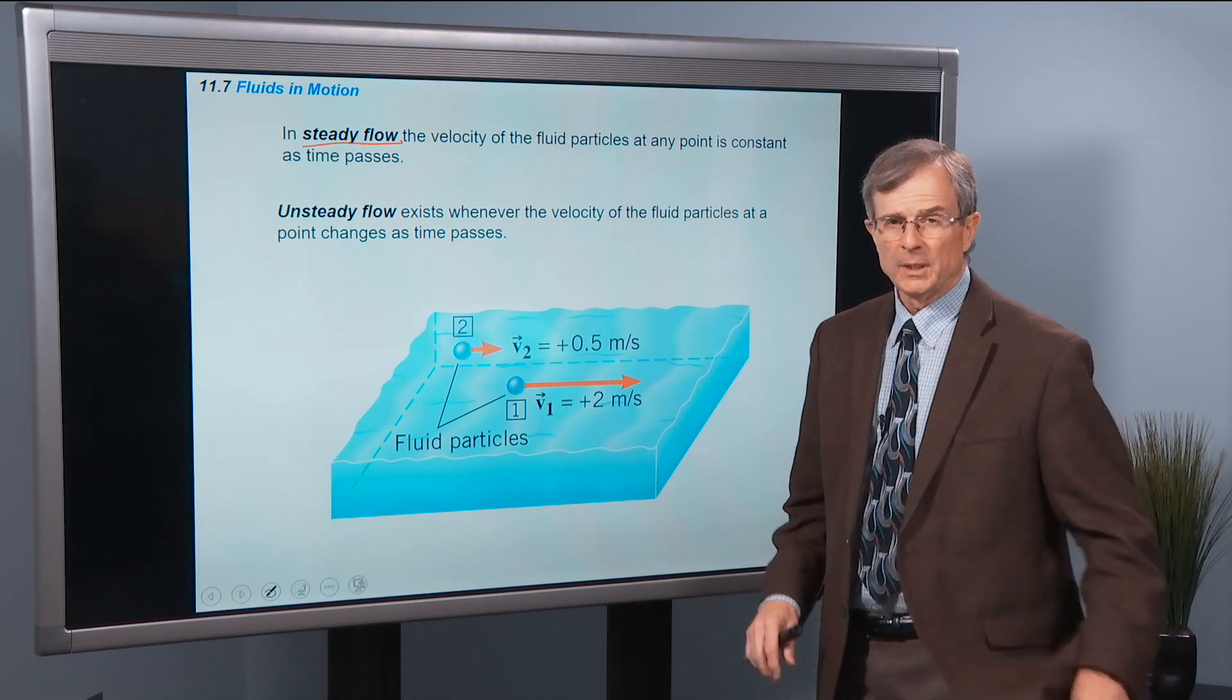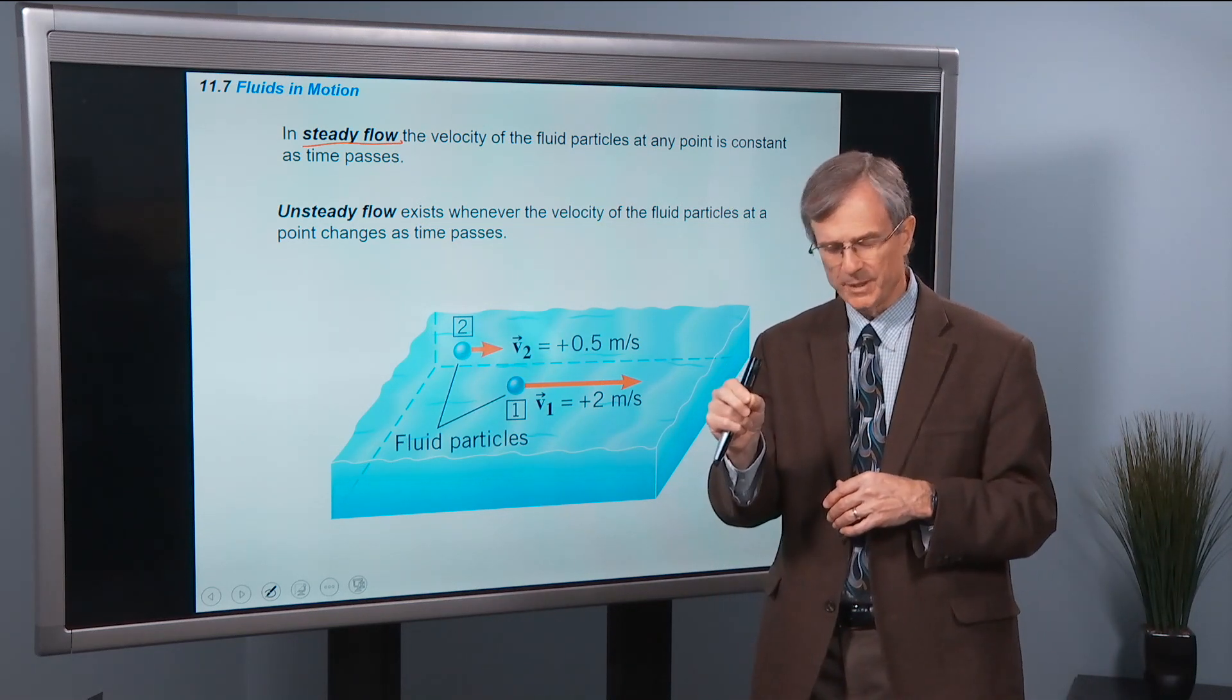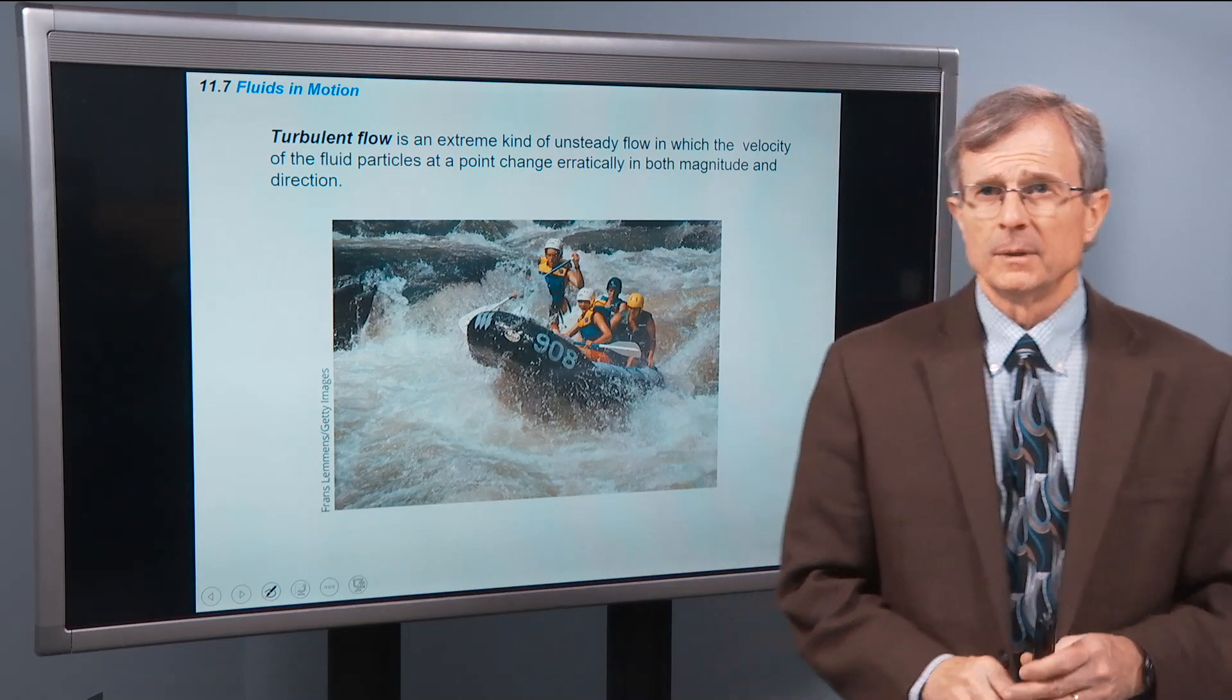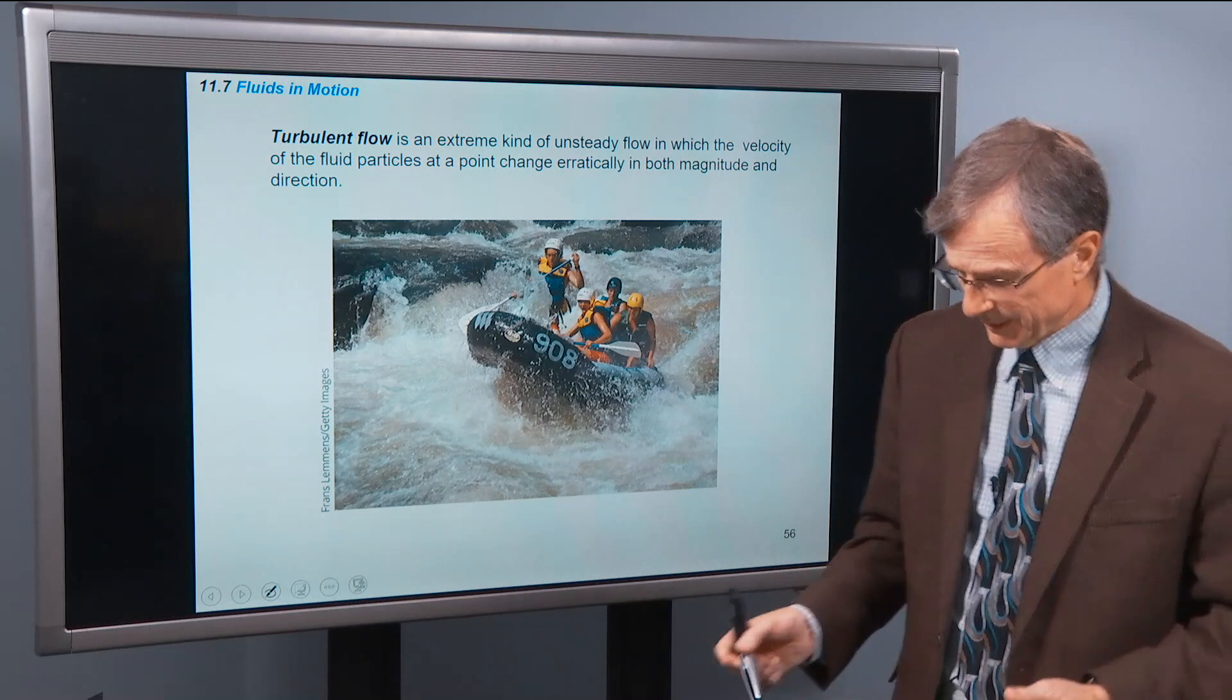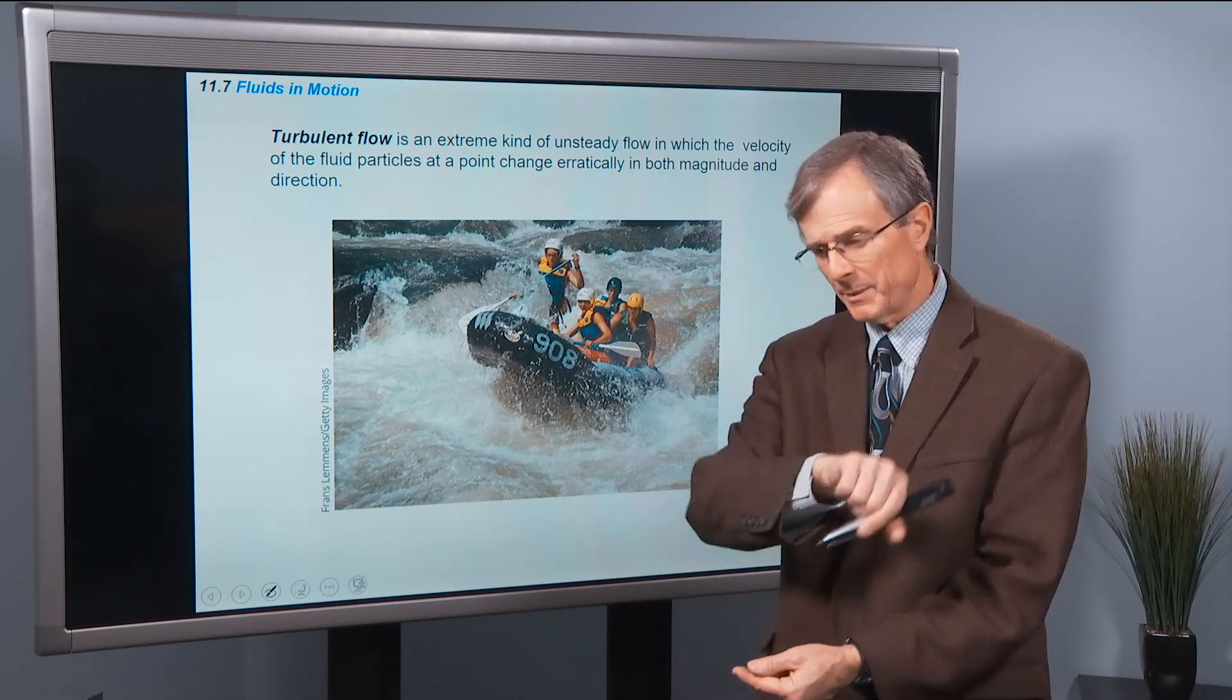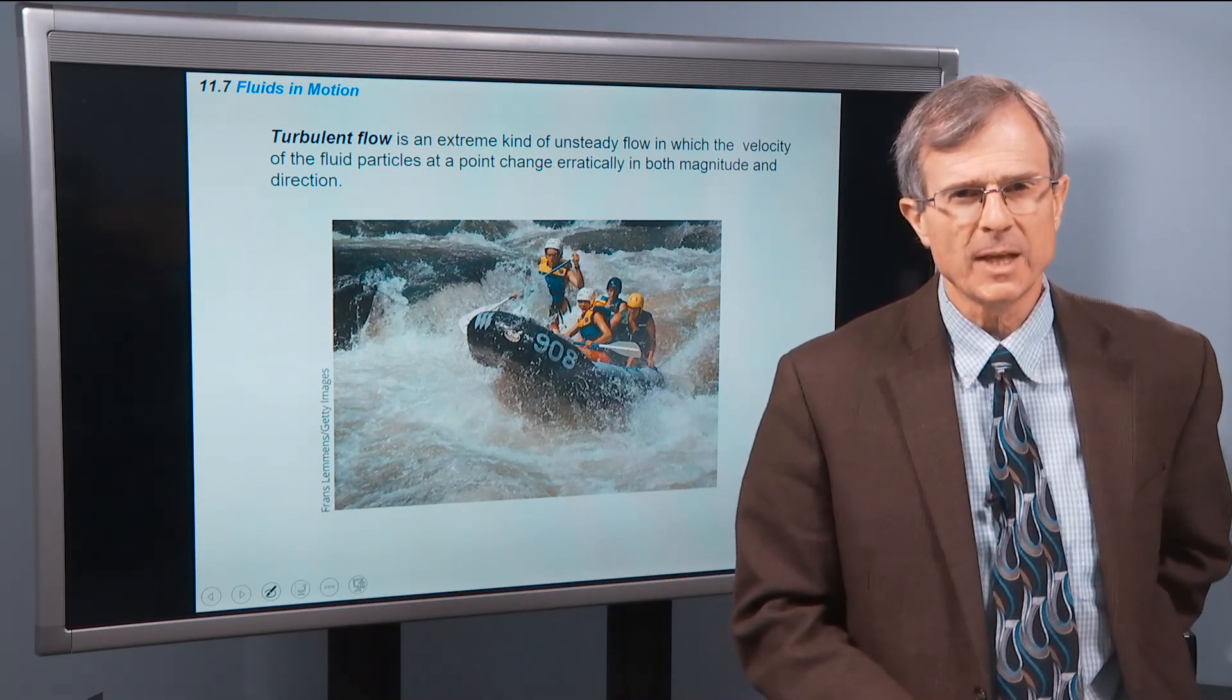Unsteady flow is like turbulence, where things are moving around and the velocity at one particular point varies with time. With turbulent flow, if you pick a spot below some rock in the river, just two centimeters above that rock, the flow might be this way at one moment, and that way at another moment. And that's an extremely unsteady flow.